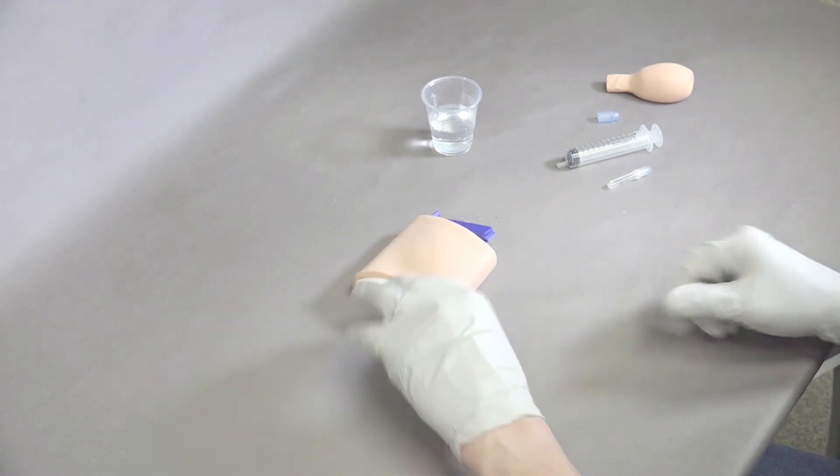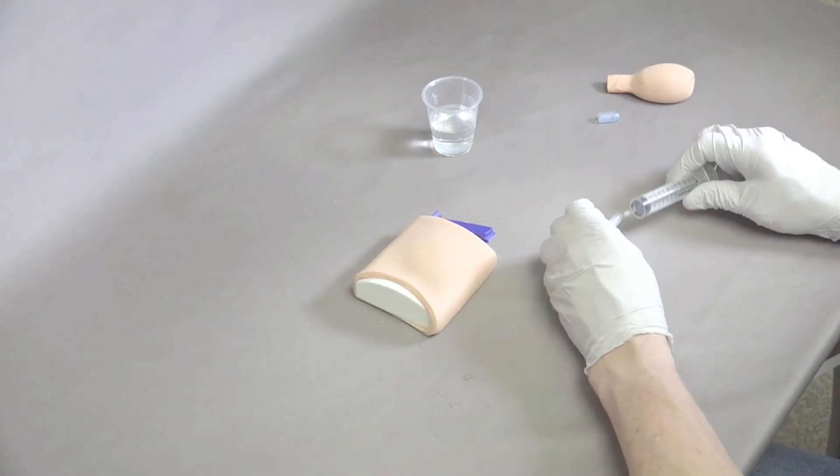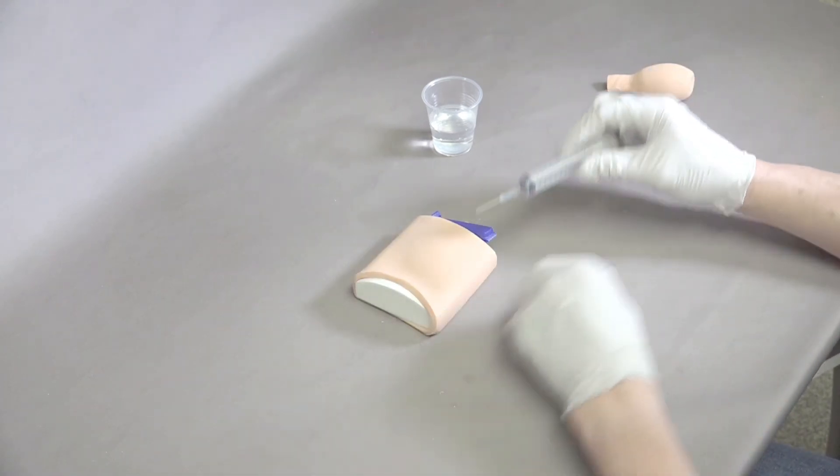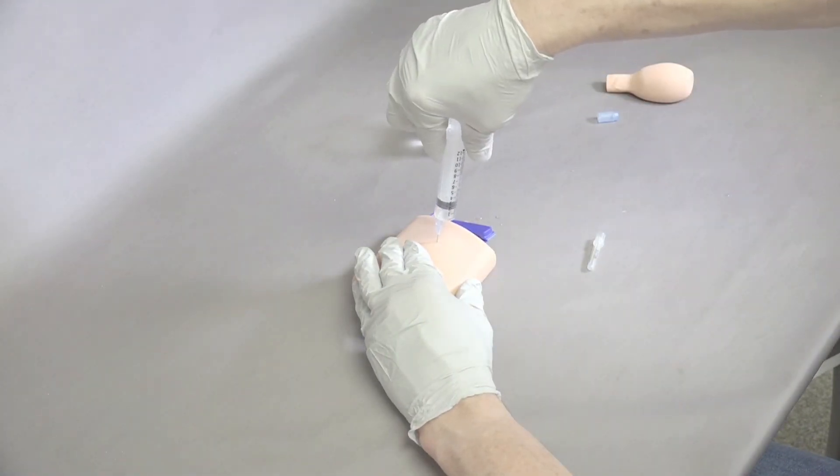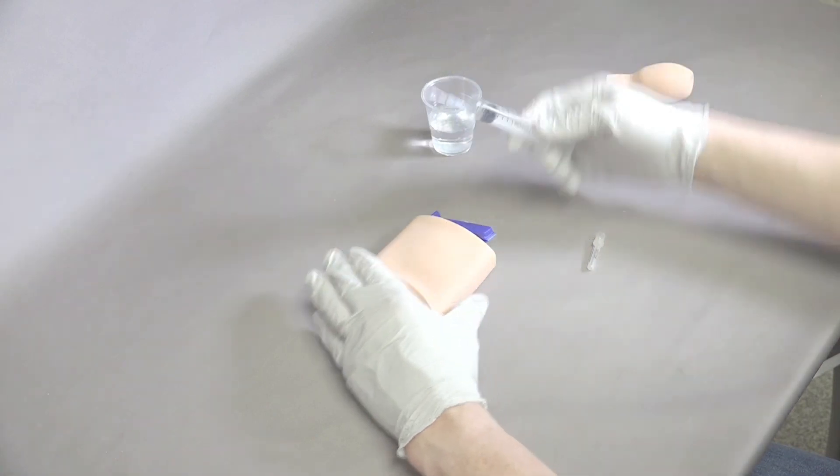Now it's very obvious where the bladder is. Attach the needle to the syringe, palpate, go straight down, and aspirate the simulated urine out of the bladder for a cystocentesis.